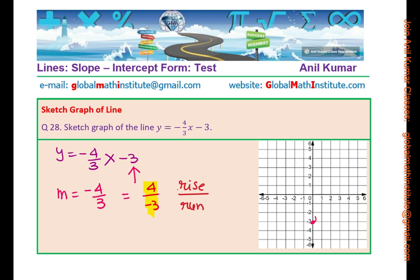That means we will go up by 4, 1, 2, 3, 4, and then 3 left, 1, 2, 3. That's where you are. You can again go 4 up, 1, 2, 3, 4, and 3 left, 1, 2, 3. So you get these three points, which need to be connected with a straight line to draw the given line. We can now sketch it, as you can see. That is how we have to sketch a line. Is that clear to you?